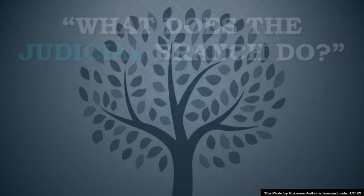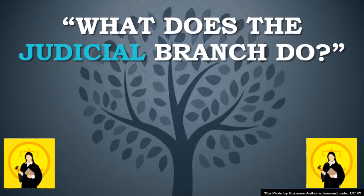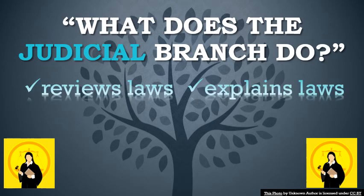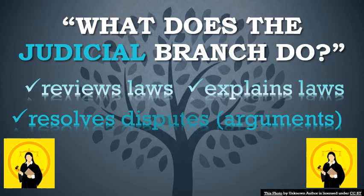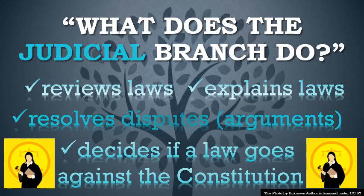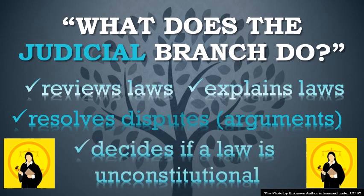Finally, one last question for you: What does the judicial branch do? Well, the court system reviews laws, explains laws, and very importantly, resolves disputes. That means that if two parties are fighting or arguing and can't agree on whether something should be legal or not, the judicial branch gets to make that decision. Those judges have the final word — no one in Congress, nor even the President, can ignore their decision. The biggest judgments usually revolve around deciding whether a law goes against the Constitution, the supreme law of the land. To put it another way, they decide if a law is unconstitutional or not.